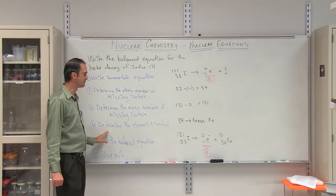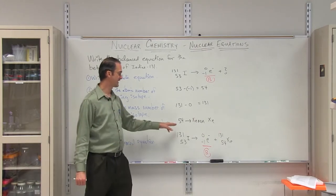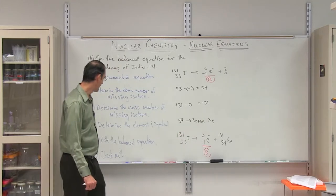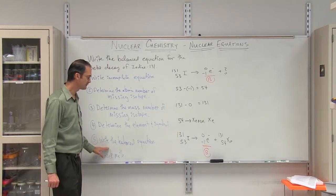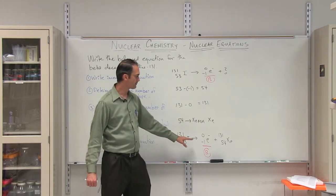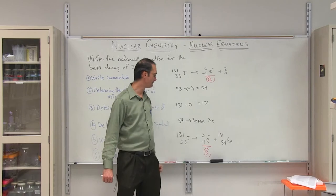So we have to determine the element and the symbol. Well, if you look in the periodic table, number 54 will be xenon with a symbol of Xe. And then finally, we write the balanced equation where we go from 131 iodine to a beta particle plus 131 xenon.